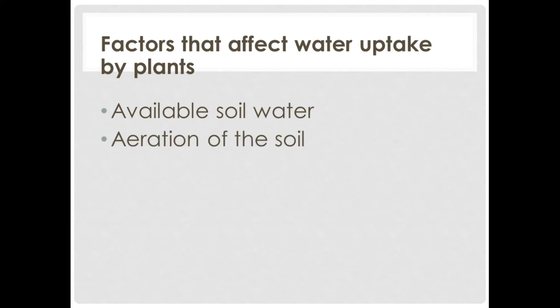Next we want to look at the aeration of the soil. Absorption is mainly faster in well aerated soils than badly aerated soils. Aeration affects the process of aerobic metabolism of the roots. Poor aeration is mainly due to excess soil moisture or compaction. However, roots of species such as hydrophytes can still absorb water even in an anaerobic condition.